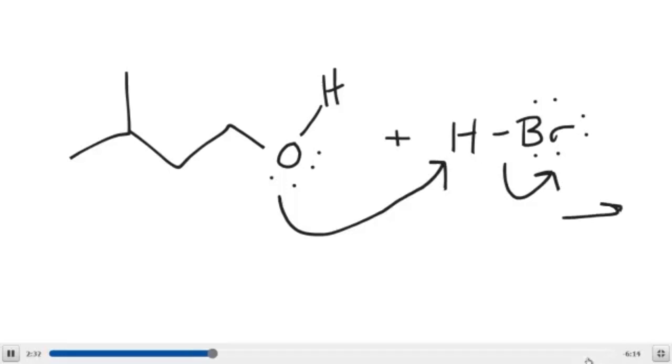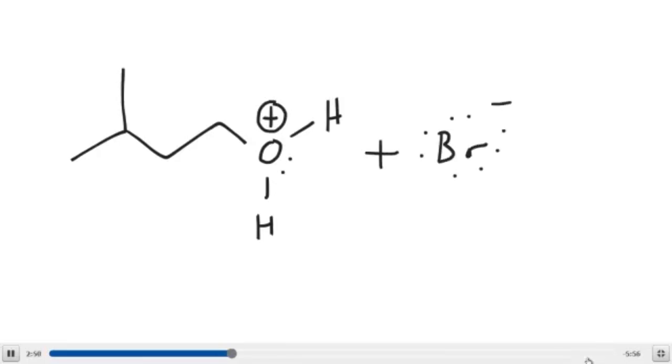As a result of that, we'll make an alkyloxonium ion. Just as I said with the SN1 mechanism, this is a weaker acid-base pair. You can check that out too, using a pKa table.